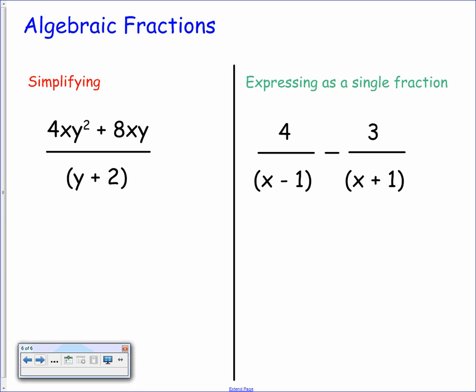If you look at the numerator you've got 4xy squared plus 8xy but it's quite clear that there's a common factor in there. There's a common factor of 4 first of all but there's also an x and there's also a y. So let's take all of that out. To get back to what we started with we have to multiply 4xy by y and 4xy by 2.